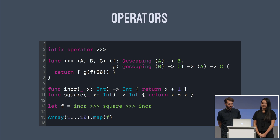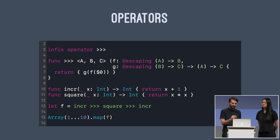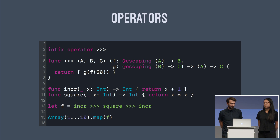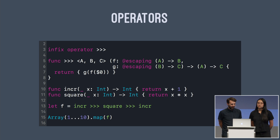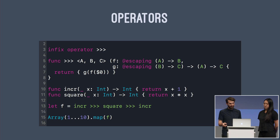Swift has support for custom operators, which allows us to write expressive code with nice algebraic properties. Here we've defined a forward composition operator — it takes a function from A to B and a function from B to C, and returns a function from A to C. We defined an `increment` function and a `square` function, and can derive new functions by composing them in any order. For example, `f` is increment, then square, then increment again, and we can pass that `f` to `map` to transform an array of integers from 1 to 10.